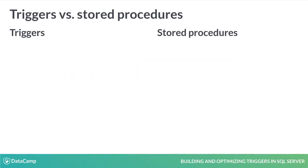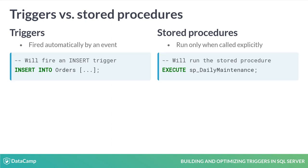The first comparison of triggers is with regular stored procedures. The trigger is a stored procedure as well, but a special kind. What makes it so special? A trigger is fired when a defined database or server event occurs, while regular stored procedures run when called explicitly. A trigger runs only when the event that fires it is starting.